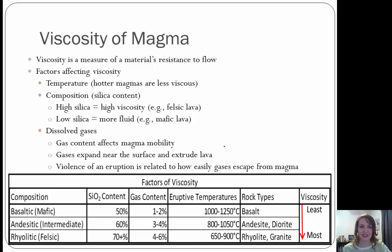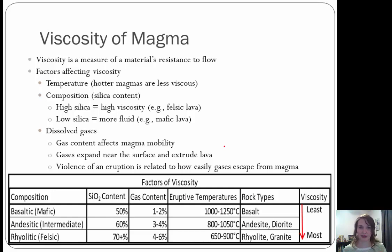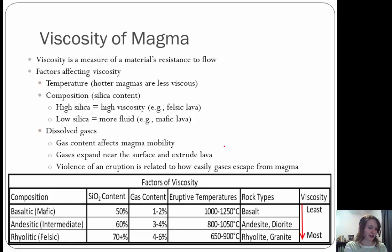Dissolved gases: gas content affects the magma's mobility. Gases expand near the surface and are extruded. The violence of eruption is related to how easily the gases can escape. When talking about resistance to flow, honey is an example of more resistant to flow, while water is less resistant. Two examples are the quiet volcano of Hawaii and the explosive Mount St. Helens.